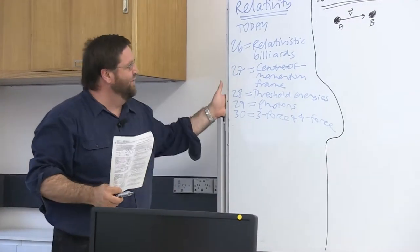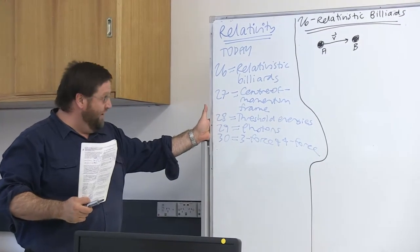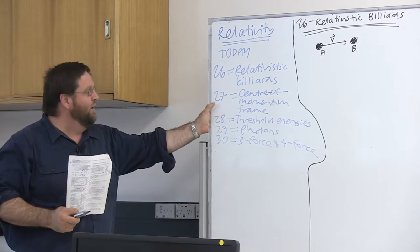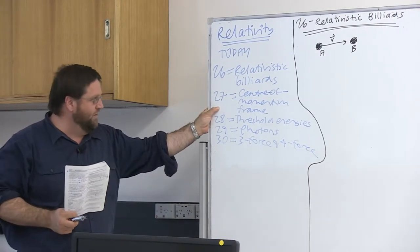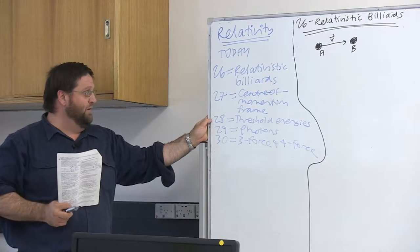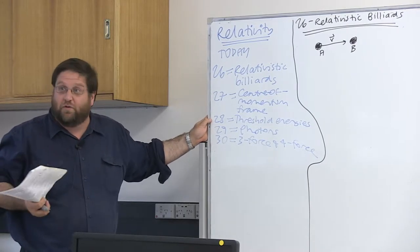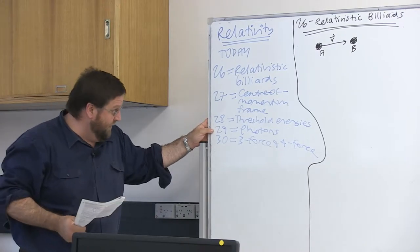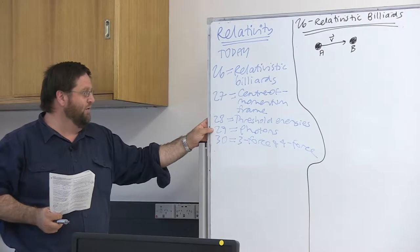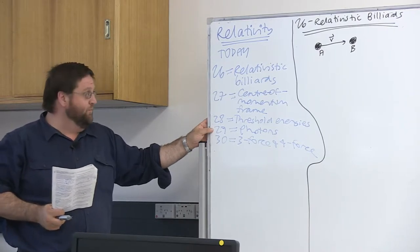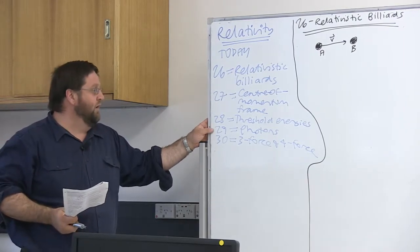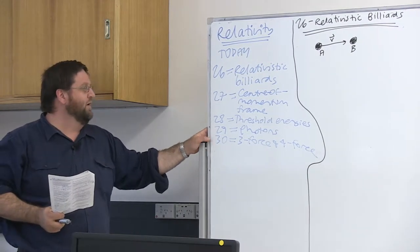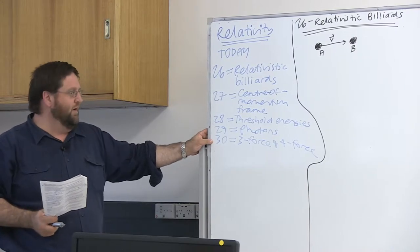Hello, welcome back to another relativity class. Today we're going to do lots of cool stuff. We're going to do billiards the relativistic way. We're going to introduce a very important concept, the center of momentum frame, the idea of threshold energies — how much energy do you need to create new particles in a particle accelerator? We'll study some photons from a relativistic perspective, specifically the four-momentum and the energy-momentum tensor for photons, and study the Compton effect from the perspective of relativity. We'll also tensorialize the idea of force.